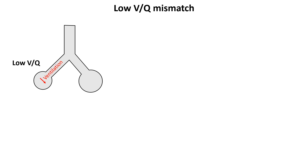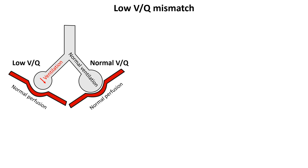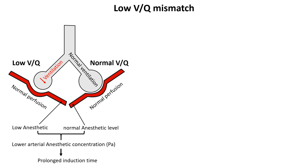When V/Q is low, ventilation to certain alveoli is reduced while perfusion remains relatively normal. This means that less anesthetic reaches these alveoli, resulting in lower alveolar concentration in these regions. Since arterial blood leaving the lungs is a mixture from both well-ventilated and poorly ventilated alveoli, the overall arterial anesthetic concentration is lower. With lower arterial anesthetic concentration, the anesthetic concentration in the brain rises more slowly, delaying the onset of anesthesia and resulting in prolonged induction times.